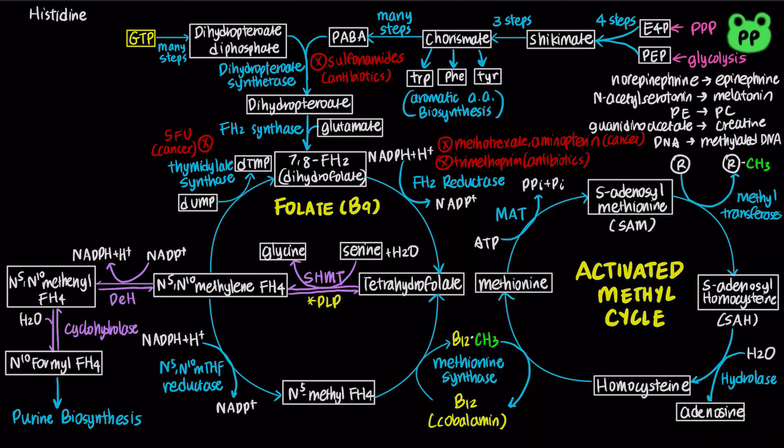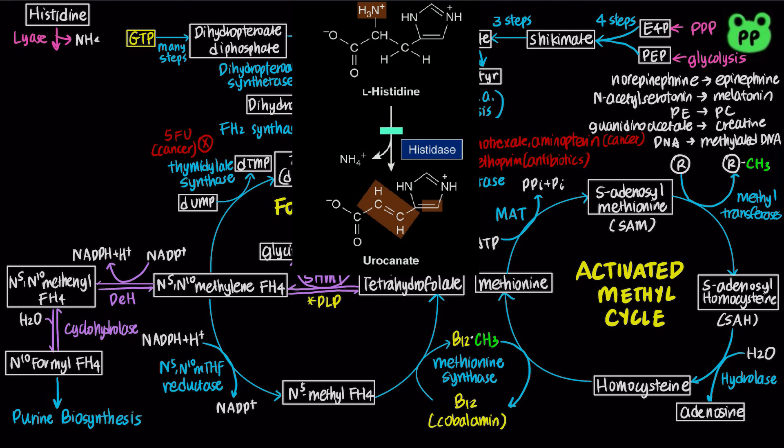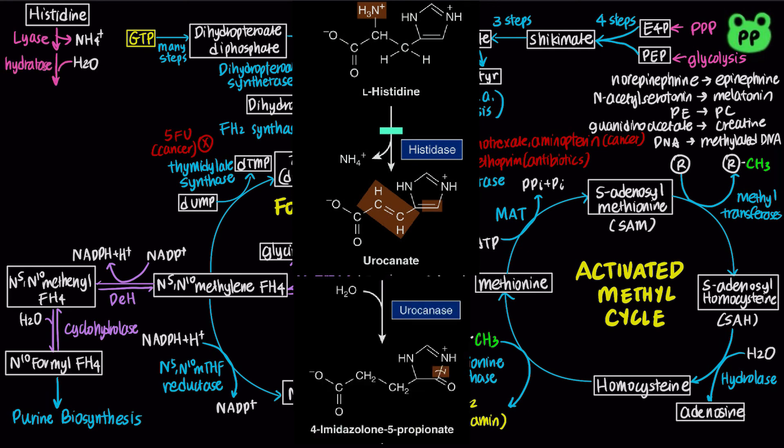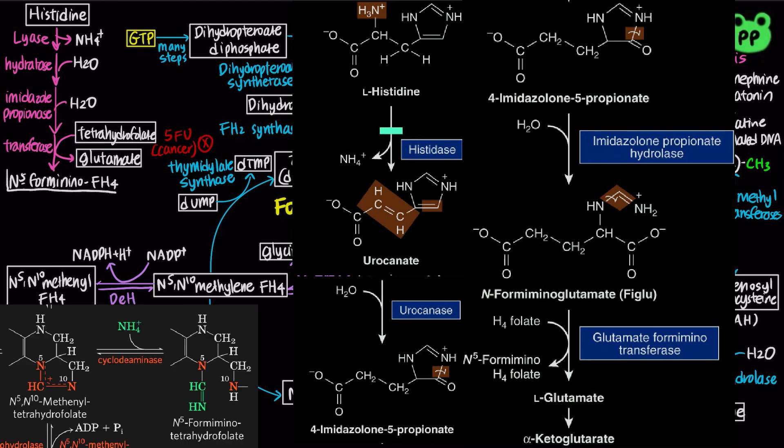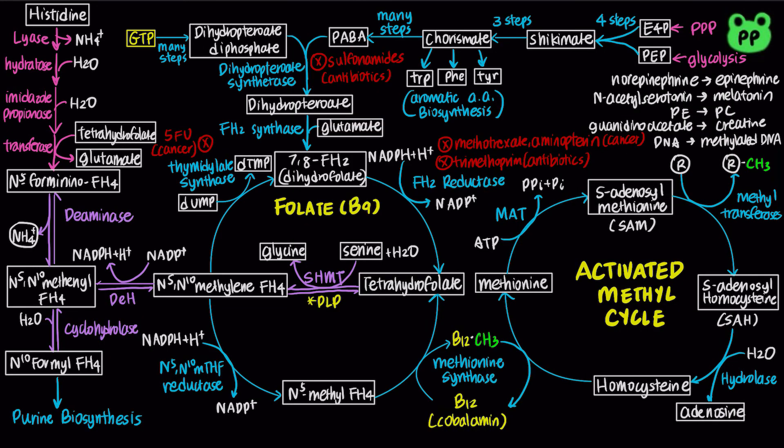Lastly, tetrahydrofolate also plays a role in histidine catabolism. First, histidine ammonia lyase cleaves off ammonium ion, producing urocanate, which undergoes hydration, hydrolysis, and transferase reactions, combining with tetrahydrofolate to produce glutamate and N5-formimino tetrahydrofolate, which can interconvert with N5,N10-methenyl tetrahydrofolate by the enzyme cyclodeaminase.